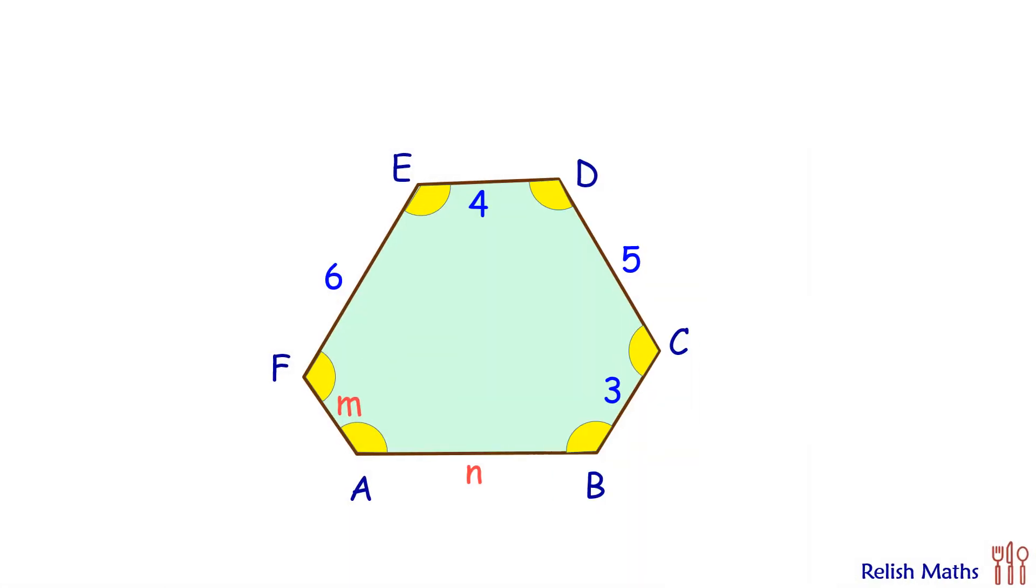Let's solve the question. For this, we'll do a small construction where we extend line FE on both sides, and likewise extend CD and AB on both sides. Let the points of intersection be X, Y, and Z.